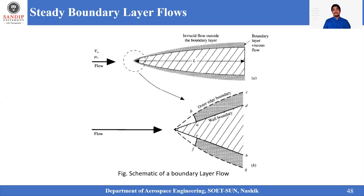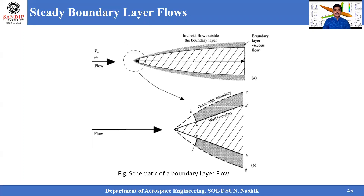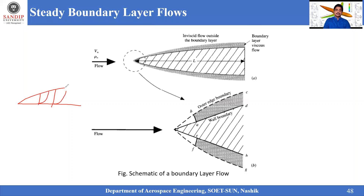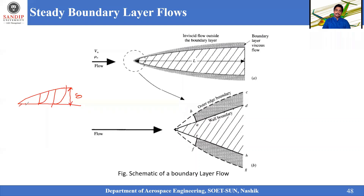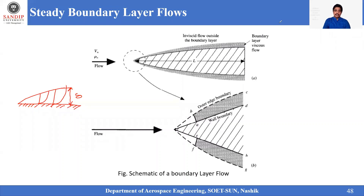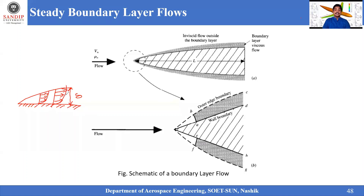In this session we look at the steady boundary layer equations. When we talk about the steady boundary layer, the initial assumption should be clear: what exactly is the boundary layer? The boundary layer thickness, generally represented by delta, is the thickness available on the solid surface when a viscous fluid moves over a solid body. There is a thickness developed on that solid surface, and that thickness is the boundary layer thickness.